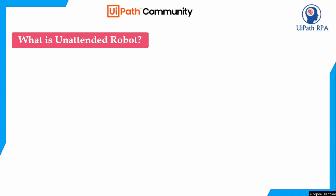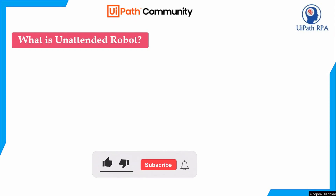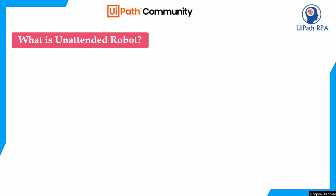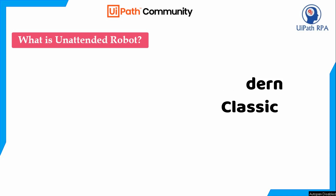Today in this video we'll talk about what is an unattended robot and how to create an unattended robot in a modern folder. As you know, there are two types of folders in Orchestrator: one is the modern folder and the second is the classic folder.